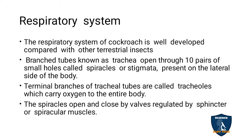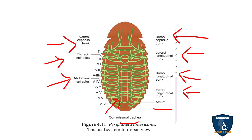You can see the branch tubules here. The branch tubes, that is called trachea. The tracheal tubes open through 10 pairs of small holes called spiracles or stigmata, present on the lateral side of the body. There are 10 pairs in total.